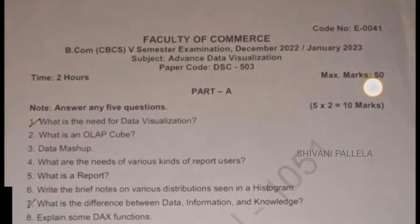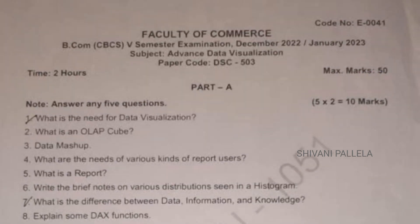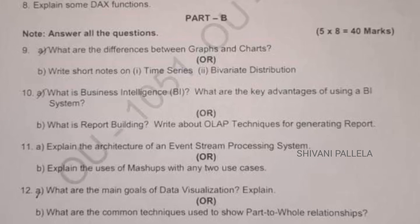Basically it's a 50 marks question paper and the time duration is two hours. In Part A, eight questions will be asked and you need to attempt any five questions, which consist of two marks each. In Part B, five questions will be given and in each question you will have an internal choice, like A as well as B.